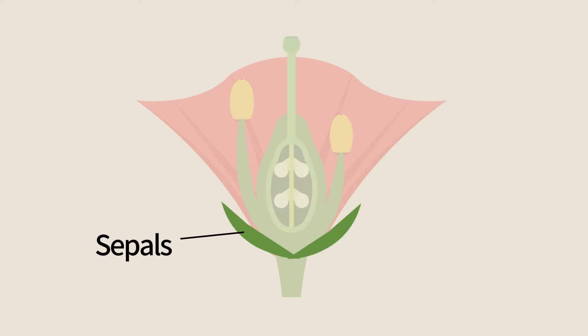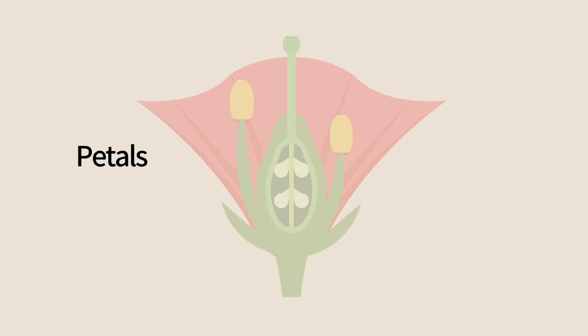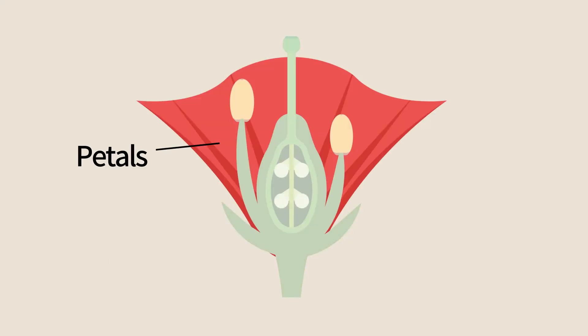The sepals, the outermost whorl, are typically green leaves that enclose the bud before the flower opens and protect its base afterwards. Some flowers lack sepals altogether. The petals are typically the largest and most colorful part of the flower and they serve for advertising it.